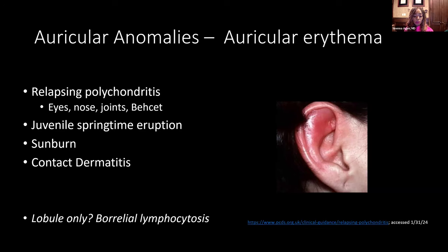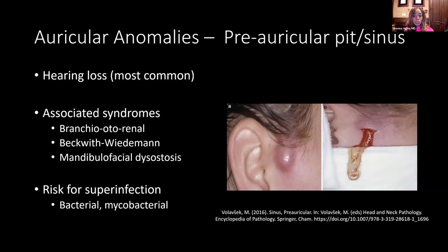If you see redness on the lobule, especially with infiltration, that can be a sign of Borrelial lymphocytoma — a tardive feature following a tick bite from the European Dermacenter. Another common feature you may see around the ear is a preauricular pit or sinus. Isolated pits can run in families, unilateral or bilateral. The most common association outside of the skin is hearing loss, so you want to make sure these patients have passed their initial hearing screen and refer to audiology if needed. Preauricular pits can be associated with rare syndromes including Beckwith-Wiedemann and branchio-oto-renal syndrome, where patients may have renal anomalies.